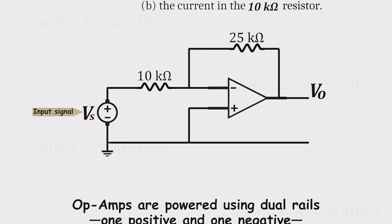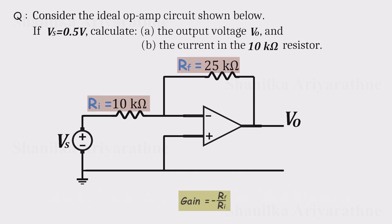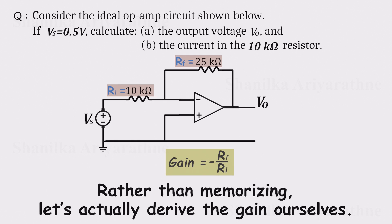If inverting amplifiers are new, check the full tutorial in the description. If you know the drill, remember the shortcut. The closed loop gain equals minus the feedback resistance divided by the input resistance. But rather than jumping straight to the shortcut, let's work out the gain step by step.